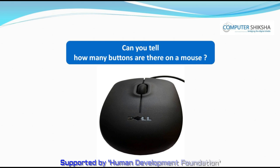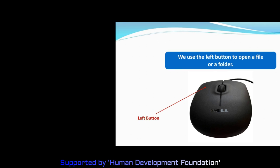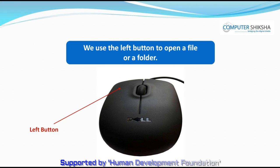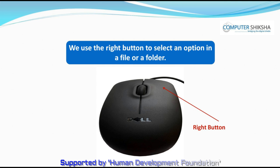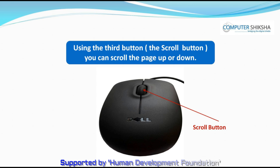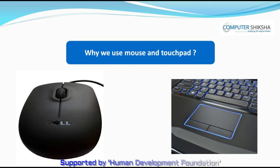Can you tell how many buttons are there on a mouse? The mouse has three buttons. We use the left button to open a file or a folder. We use the right button to select an option in a file or a folder. Using the third button, the scroll button, you can scroll the page up or down. We use the mouse or touchpad to take a pointer from one place to another on the computer screen.